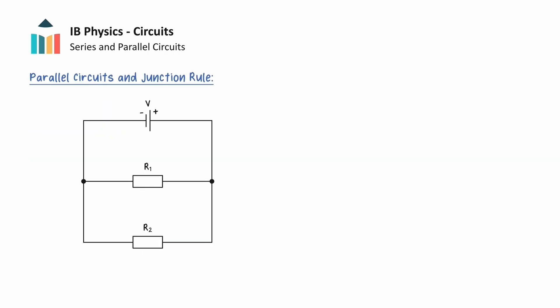In a circuit such as this one, the path between the positive and negative terminals of the cell splits into different parallel branches. Current can take either path, and this is known as a parallel circuit. The points at which the path splits and merges are referred to as junctions, and are represented by little black dots on circuit diagrams.